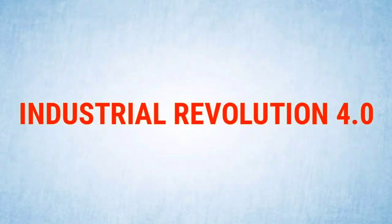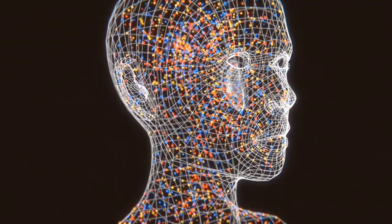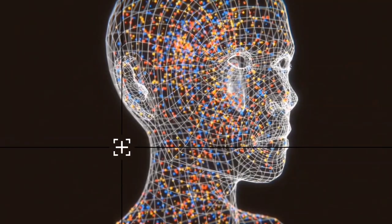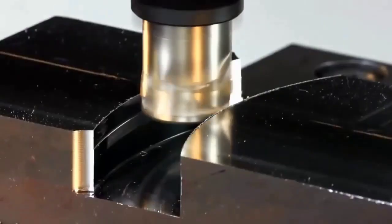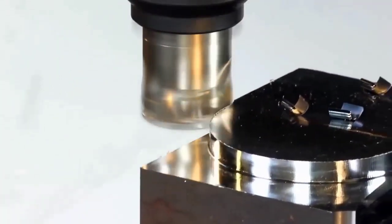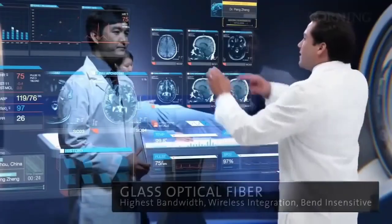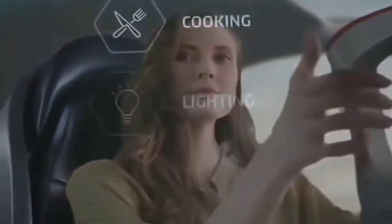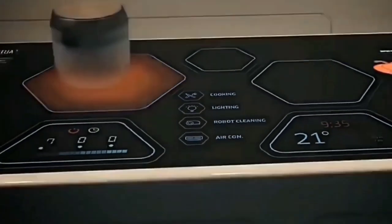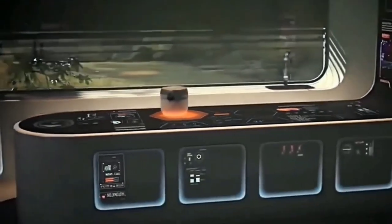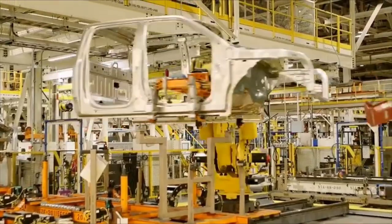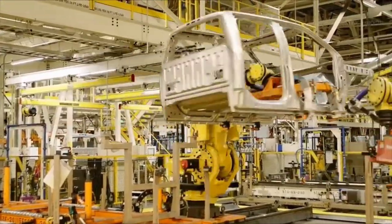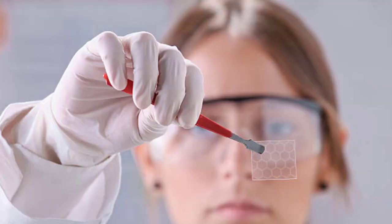Industrial Revolution 4.0 — 4th Industrial Revolution एक सामूहिक शब्द है जो Automation, Data Exchange और Manufacturing Technologies को combine करता है। 4th Industrial Revolution का वाक्यांश पहली बार World Economic Forum के Chairman Klaus Schwab द्वारा पेश किया गया था। 4th Industrial Revolution में कई सारी Emerging Technologies शामिल हैं जिनकी कुछ झलक हम आज देख पा रहे हैं जैसे Robotics, Artificial Intelligence, Nanotechnology।